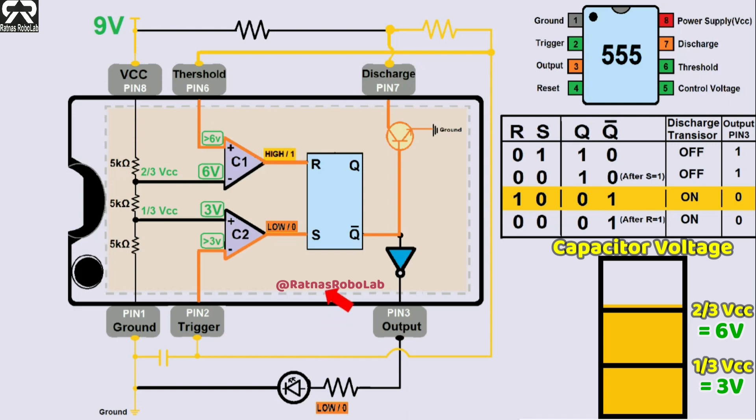This also turns on the transistor of the discharge pin and the capacitor begins to drain. Dropping below 2/3 Vcc or dropping below 6V, comparator 1's negative terminal takes priority and comparator 1's output becomes low. But 555 continues to output low.